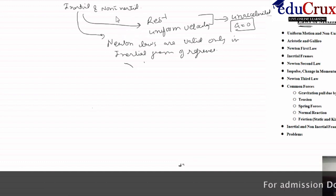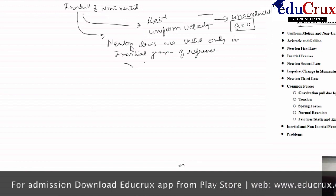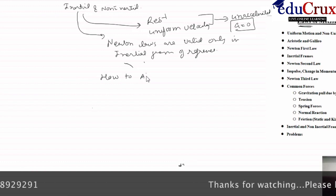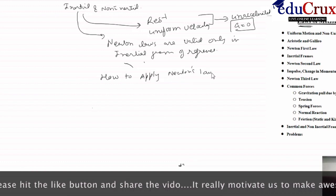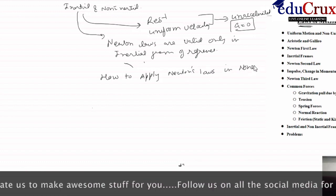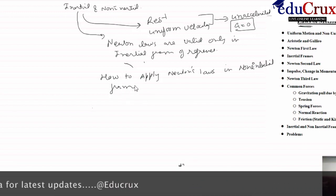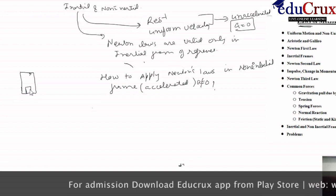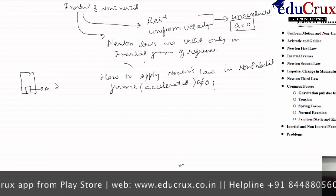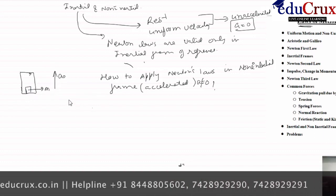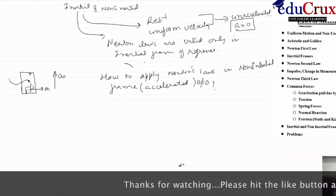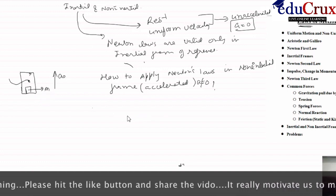We will now see how to apply Newton's laws in a non-inertial, that is an accelerating, frame where acceleration a is not equal to zero. Suppose I have an elevator and in the elevator I have a block of mass M. If this block is moving upward with an acceleration A₀, we don't know how to apply Newton's laws in this frame of reference — the frame of the elevator — because now we have an accelerating frame of reference.